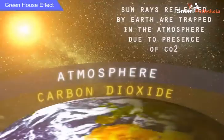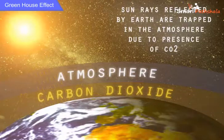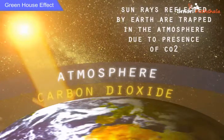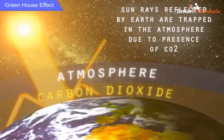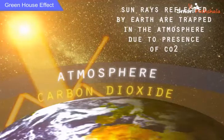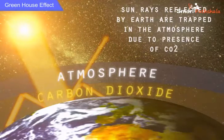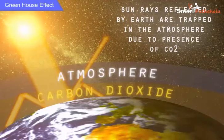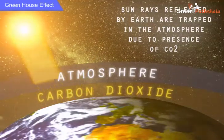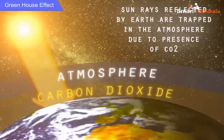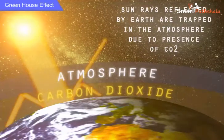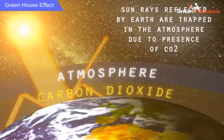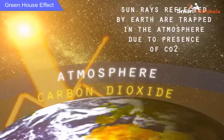Now let us discuss about the greenhouse effect. We all know that only a part of the sun's radiation that falls on the earth's surface is absorbed by it and the rest is reflected back into space. However, the presence of more amount of carbon dioxide in the atmosphere is trapping a part of the reflected radiation.